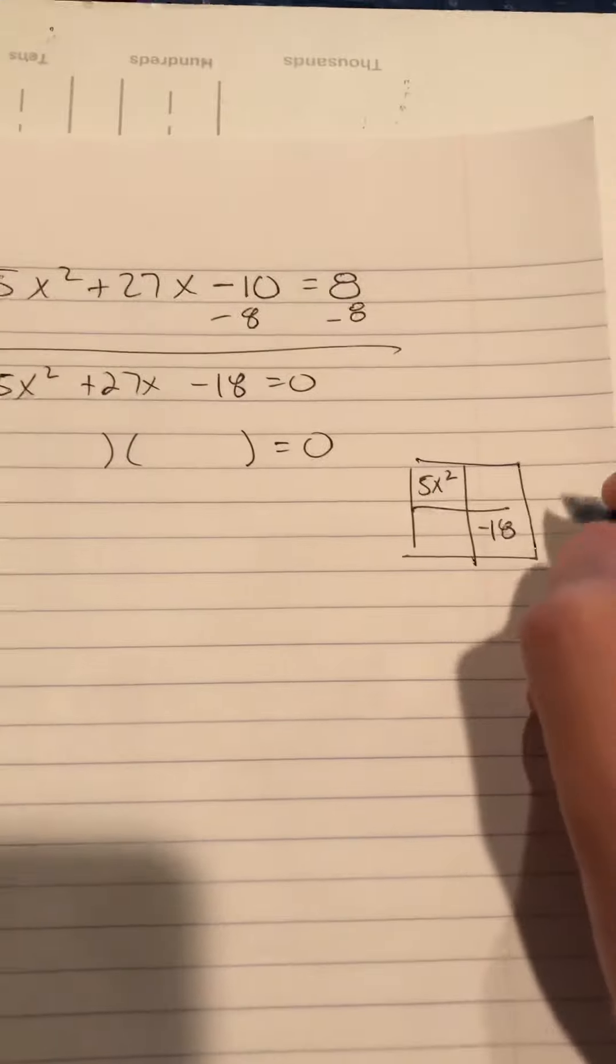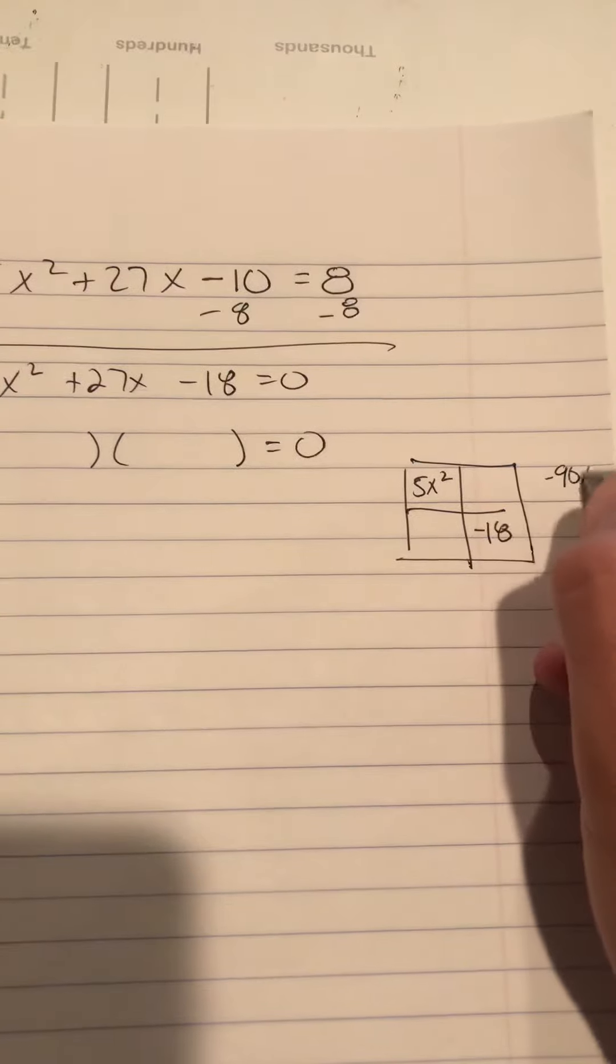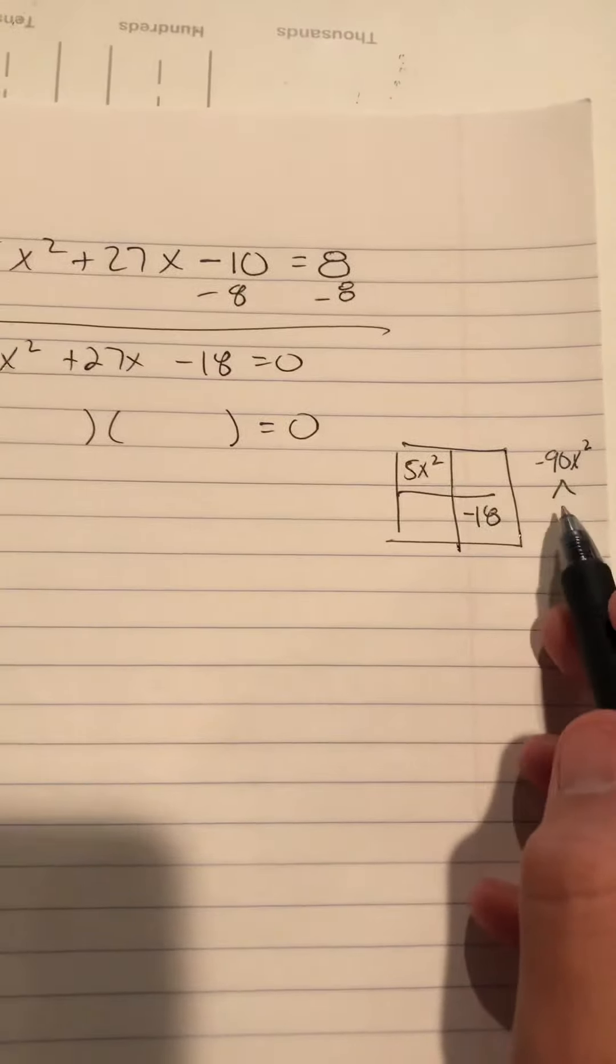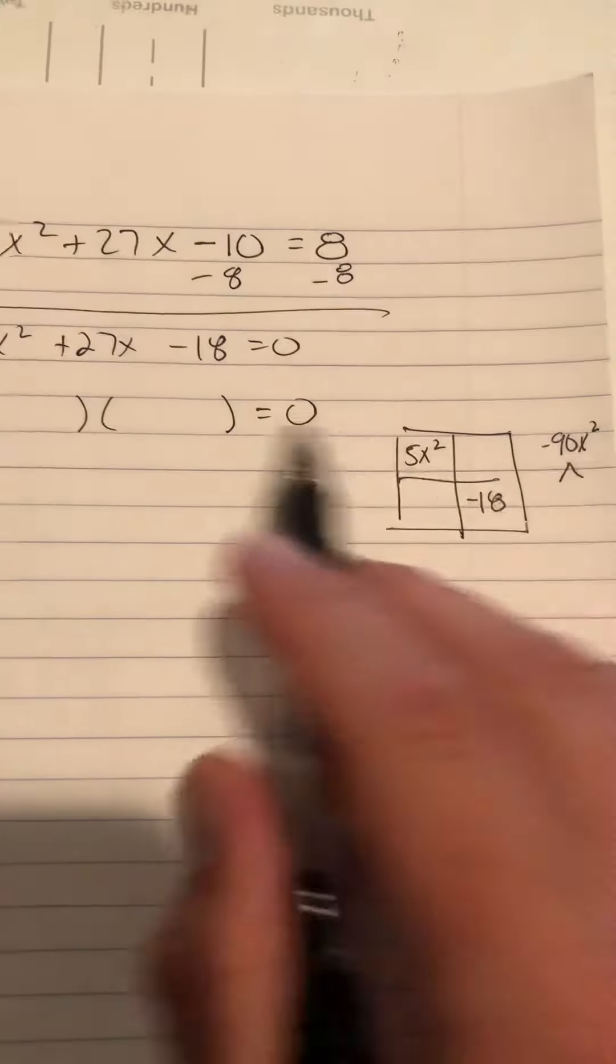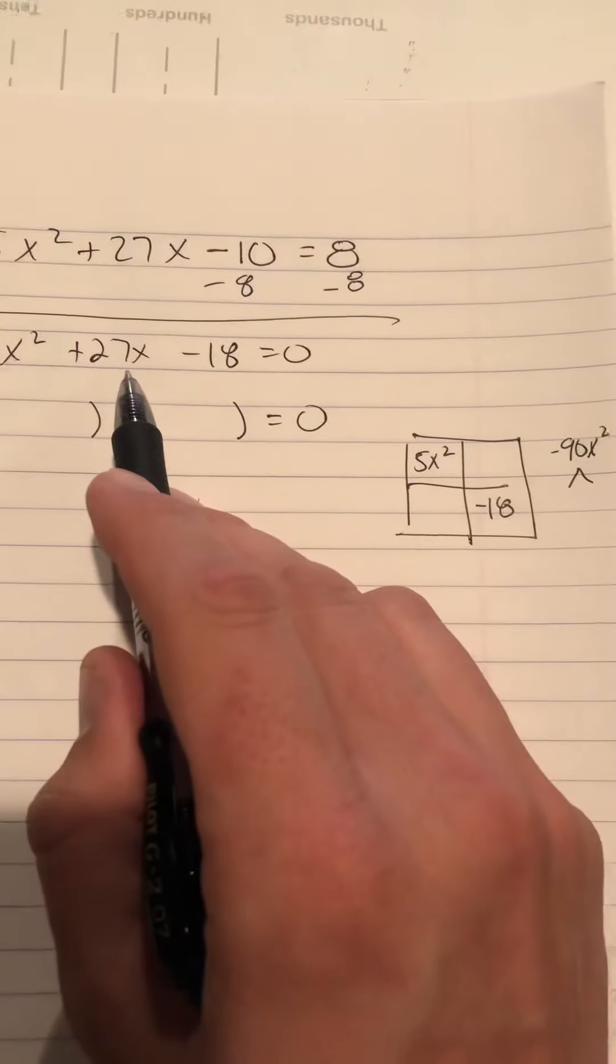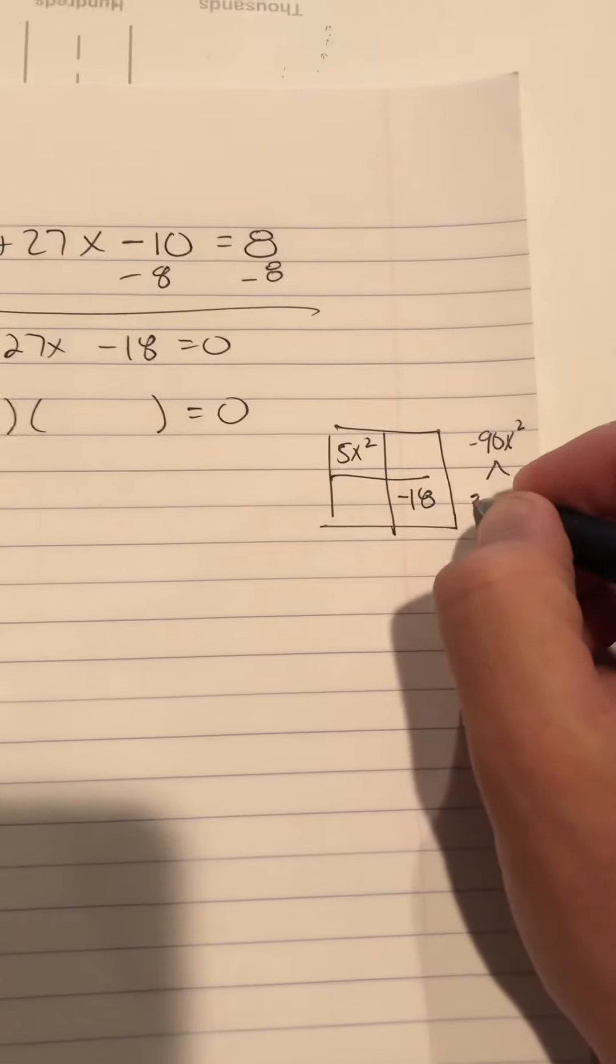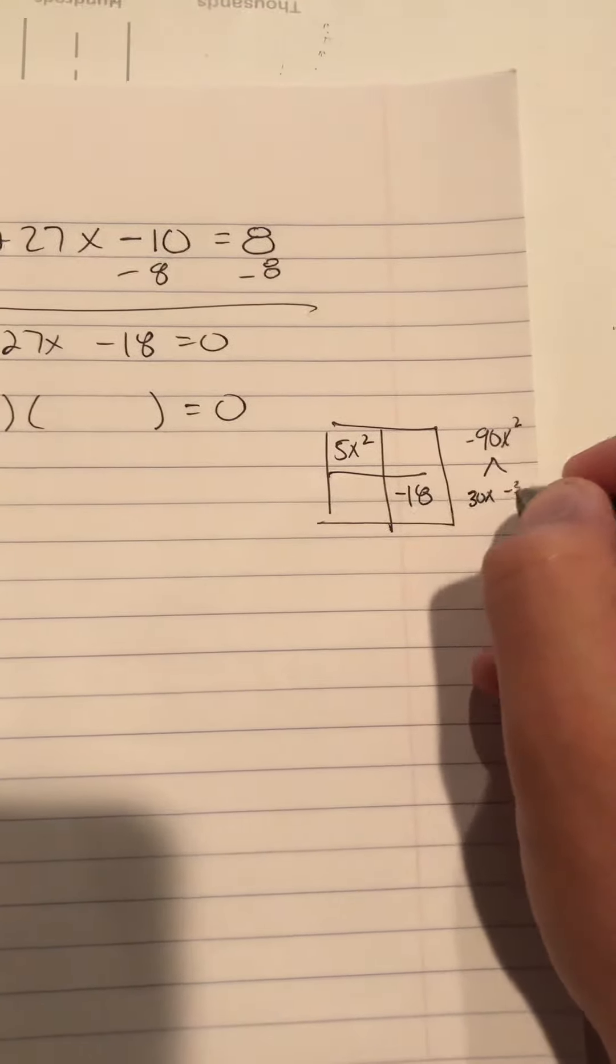From here, I need to multiply those numbers together, and I get negative 90x squared. And I'm searching for two terms that make negative 90x squared when I multiply them, but make 27x when I add them. That would be 30x and negative 3x.